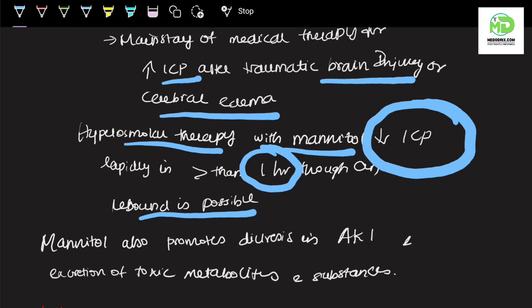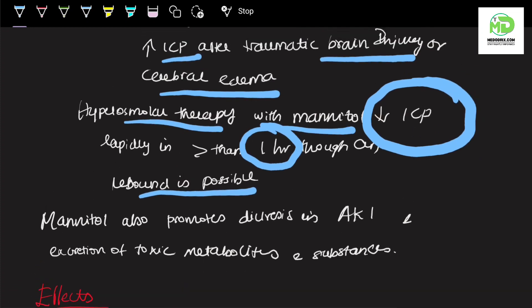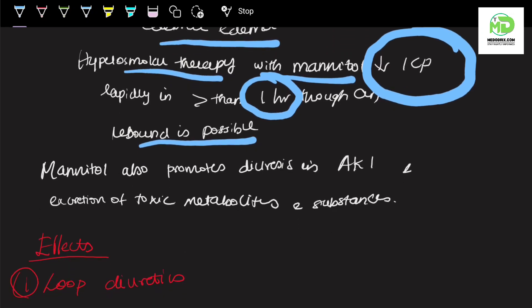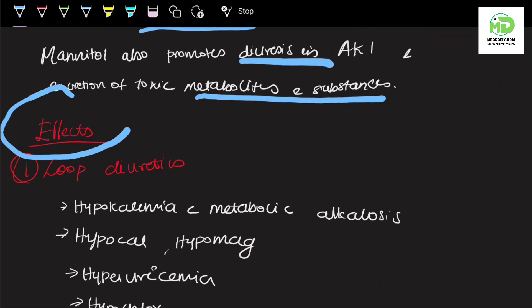Rebound is possible. Rebound means initially the intracranial pressure may rise and then it will reduce. Whenever mannitol is prescribed, in some cases it can initially increase intracranial pressure but it will reduce within the next one hour. Mannitol also promotes diuresis in acute kidney injury and excretion of toxic metabolites and substances.